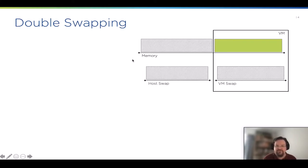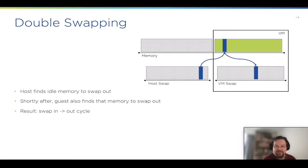Let me explain what double swapping means. Here we have an example setup with some memory, part of which is used by the VM. We have swap at the host level and swap at the VM level. If the host decides the VM needs to give up memory, it can identify some idle memory and swap it out to the host swap. Shortly after, the VM might also realize it is under memory pressure, search for idle memory and decide to swap it out.